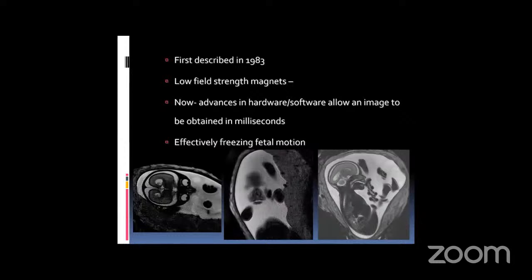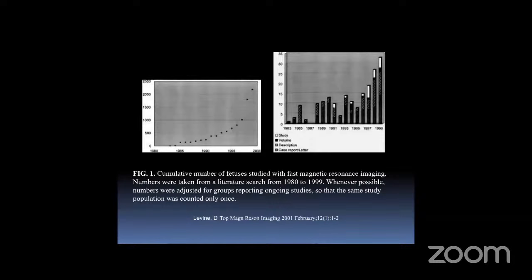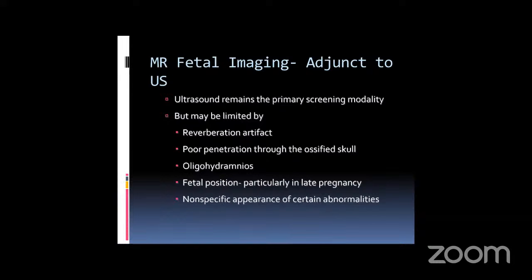The number of fetal MRI exams has been progressively increasing over the years. MRI is an adjunct to ultrasound, which remains the primary screening modality. Ultrasound has limitations including reverberation artifacts, poor penetration from an ossified skull, difficulty with oligohydramnios, difficulty with fetal positioning in late pregnancy, and non-specific appearance of intracranial CNS abnormalities.